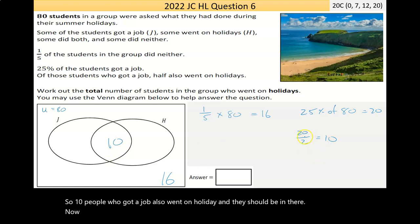Now if 10 did both, 10 only got a job, so there's 10 there.